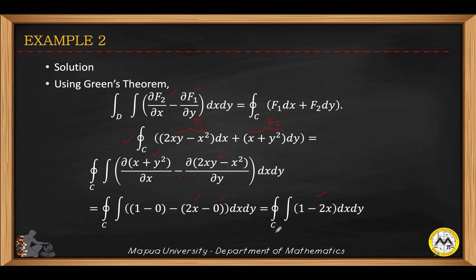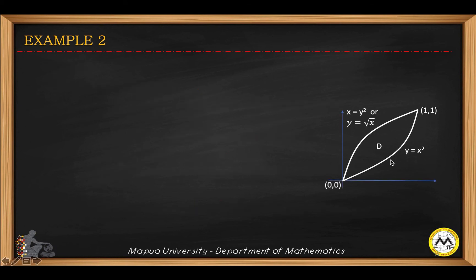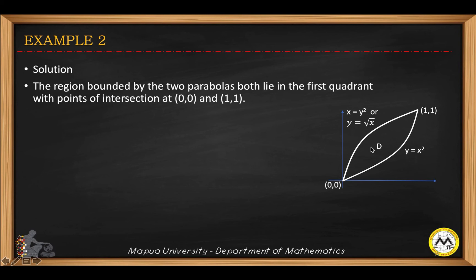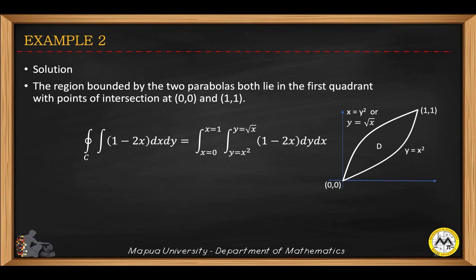How do we apply the limits? We base it on the curve C. The region is bounded by the two parabolas, both lying in the first quadrant. They intersect at the origin (0, 0) and at (1, 1). We find the points of intersection by solving the two equations simultaneously — that gives the boundary.